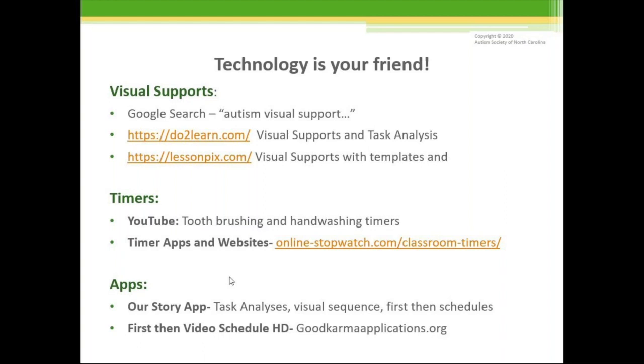This website allows you to pick which thing you want, whether it's a race or candle burning down and the time you want. And then there are apps out there. Two apps that are great for making a task analysis, a schedule, visual sequence, are the Our Story app, and First Then Video Schedule HD. Both of these allow you to take pictures of your child completing the task, upload them, and put them sequentially in order.